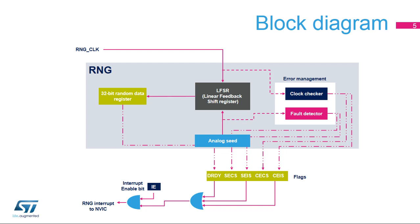In parallel, an error management block verifies the correct seed behavior and the frequency of the RNG source clock. Status bits are set, and an interrupt is triggered if an abnormal sequence is detected in the seed or if the RNG frequency is too low.